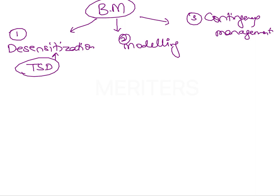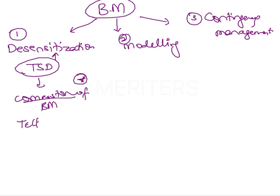The Tell-Show-Do technique, which falls under desensitization in behavior management, was given by Adelstein in 1959. It is also known as the cornerstone of behavior management — a question that has been asked previously in exams. It is the most common and most popularly used technique, and it consists of three steps: Tell, Show, and Do.